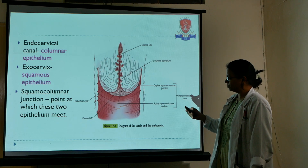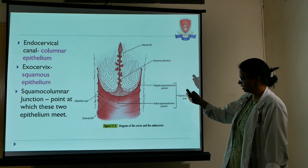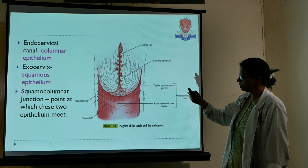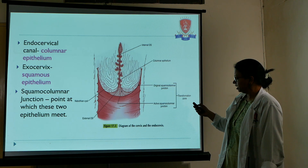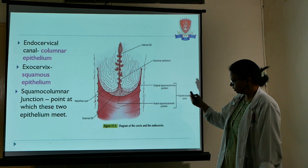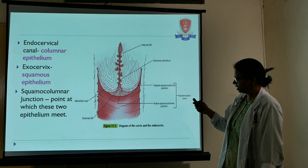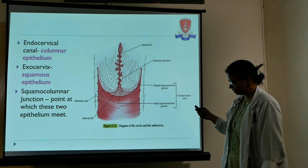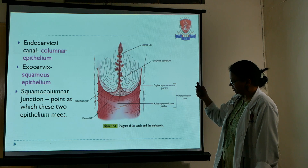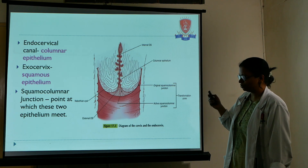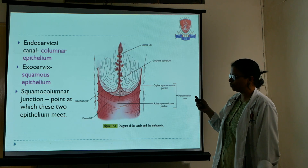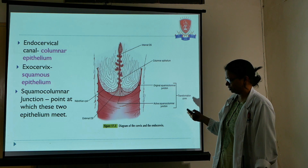In this picture, we can see the endocervical canal which is lined by the columnar epithelium, and then we have the ectocervix which is lined by the squamous epithelium. The point at which they meet is known as the squamous columnar junction.